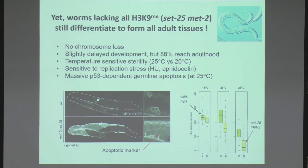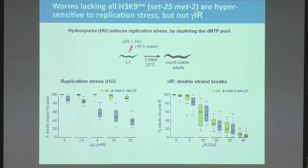The methylation-deficient worms were temperature-sensitive sterile — the germline was not fertile at 25°C but was fertile at 15 or 20°C. They were sensitive to replication stress and showed massive germline apoptosis, leading to loss of fertility with brood size dropping from about 200 to about 10. At 26°C they were totally sterile. They were also sensitive to replication interference causing somatic death, but were not more sensitive than wild type to double-strand breaks — so the sensitivity was specific to replication stress.